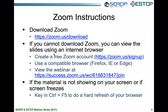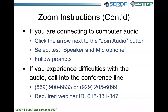The next several slides provide instructions on optimizing your webinar experience. If you have not done so already, please download Zoom at the link shown here and in your slides. If you have difficulty downloading Zoom, you can view the slides using a compatible internet browser, such as Firefox, IE, or Edge. If you continue to have difficulties with the slides or if your screen freezes, please try keying Control and F5 to perform a hard refresh. If you are accessing the audio through your computer, click the arrow next to the Join Audio button, select the speaker and microphone, and follow the prompts as they appear on your screen. If you continue to have problems, please call into the conference line shown here.